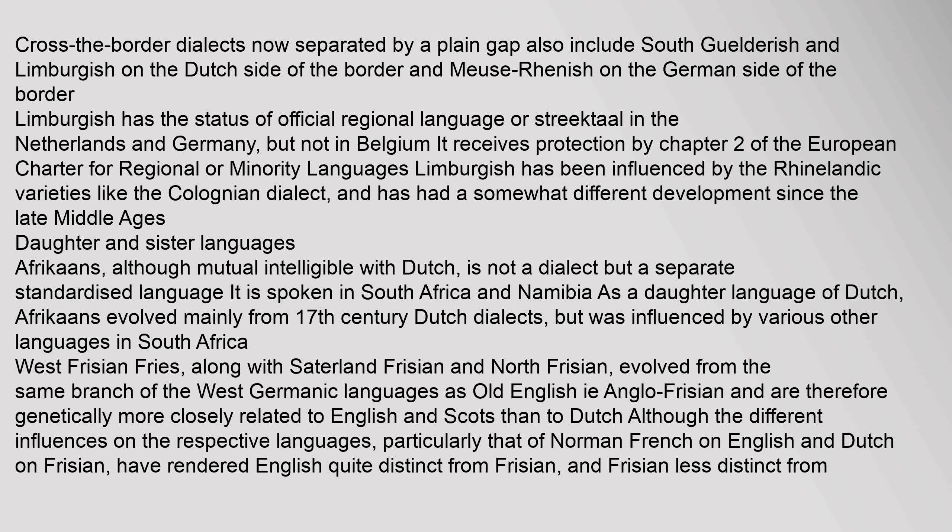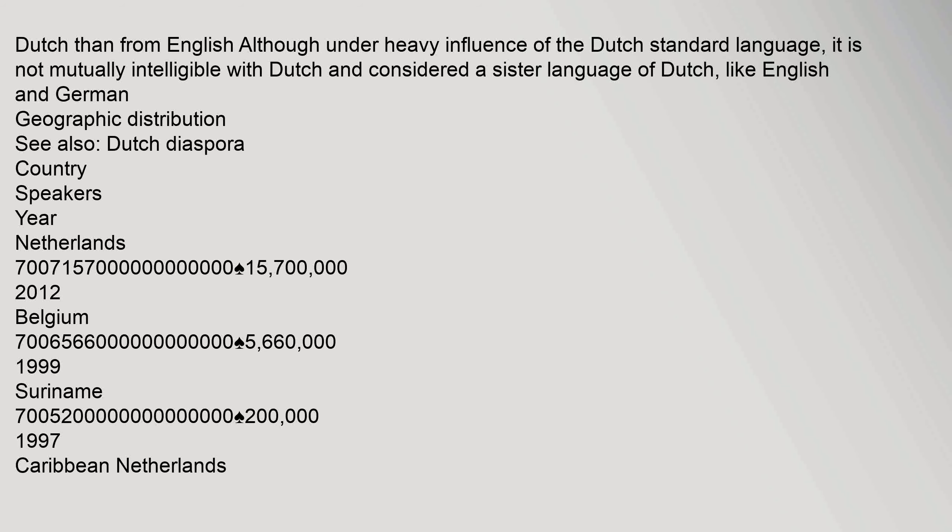Afrikaans, although mutually intelligible with Dutch, is not a dialect but a separate standardized language spoken in South Africa and Namibia as a daughter language of Dutch. It evolved mainly from 17th century Dutch dialects but was influenced by various other languages in South Africa. West Frisian, along with Saterland Frisian and North Frisian, evolved from the same branch of West Germanic as Old English (i.e. Anglo-Frisian), making it genetically more closely related to English and Scots than to Dutch. Although heavily influenced by the Dutch standard language, West Frisian is not mutually intelligible with Dutch and is considered a sister language of Dutch, like English and German.